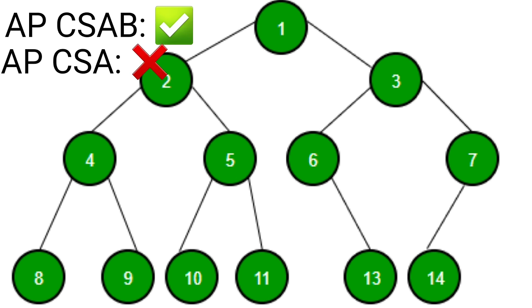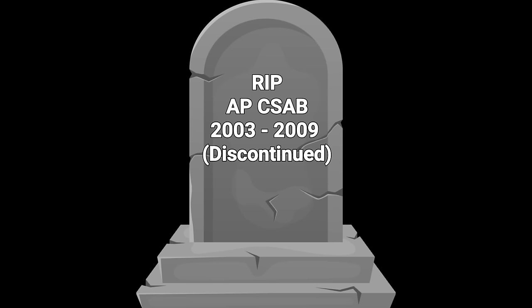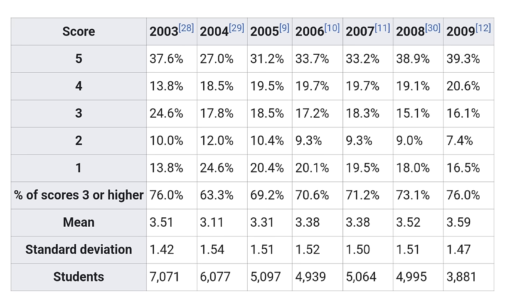The use of recursive data structures and dynamically allocated structures were fundamental to AP Computer Science AB. Due to low numbers of students taking the AP Computer Science AB exam, it was discontinued after the 2008-2009 year. The grade distributions from 2003-2009 are shown below.